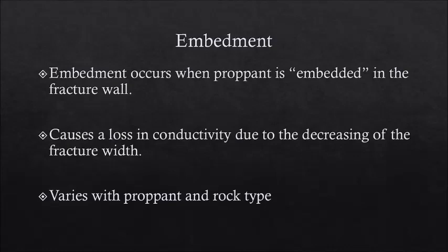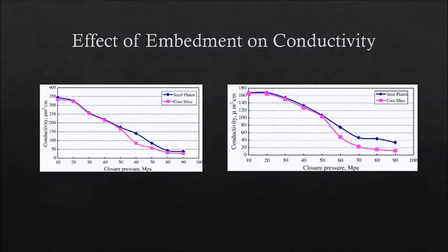Embedment occurs when a proppant is embedded in the fracture wall. This causes a loss in conductivity due to the decreasing of the fracture width, and it also varies with proppant type and rock type. This is backed up by a study published in 2007 by the Journal of Petroleum Sciences and Engineering. By looking at the difference between the two lines, one can easily see that embedment adversely affects conductivity.